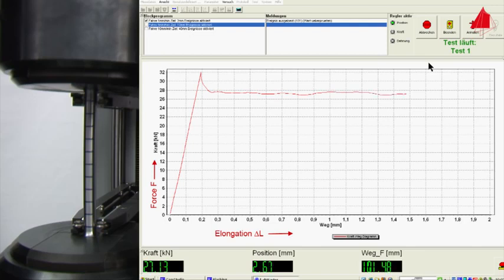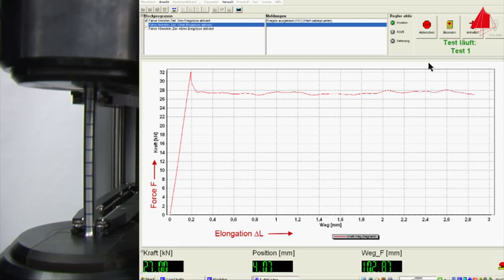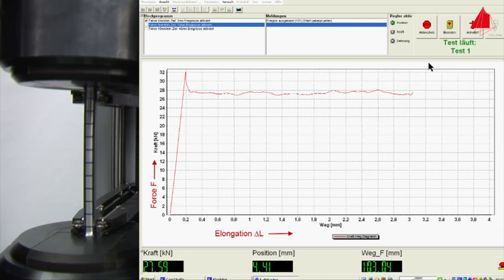In the next stage of the tensile test, an almost constant force level with slight fluctuations occurs. This phenomenon is called the Lüders effect. After a certain strain, known as the Lüders strain, the force increases again.